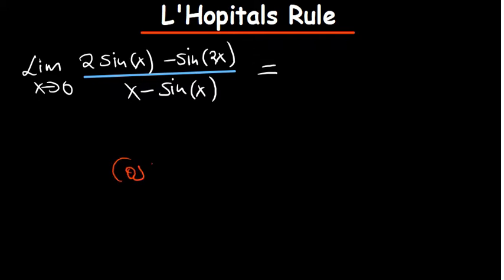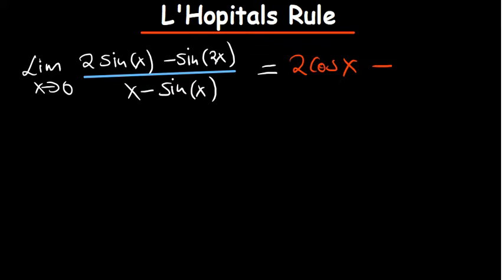The derivative of sine is cosine. Differentiating the numerator: differentiate whatever is in the brackets and multiply by the coefficient. The derivative of x is one, one times two is just two. Derivative of sine is cosine of x, minus derivative of sine again is cosine of 2x — now we multiply by the derivative of what's in the brackets, which in that case is two.